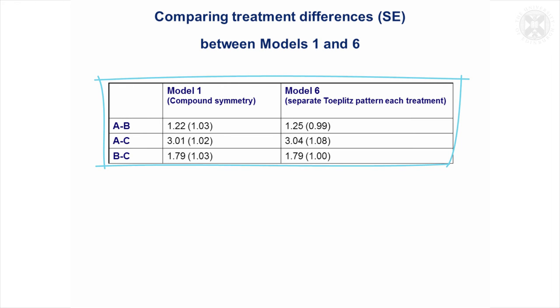So these are the treatment differences, and that was what we would have got with Model 1 with that simple structure, which is equivalent to just fitting patient effects as random. This is what we got with Model 6, with the separate Toeplitz banded pattern for each of the treatments.